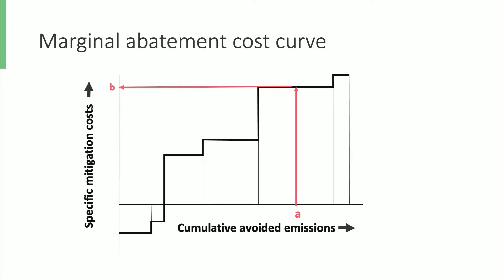Conversely, you can also determine how much emissions you avoid if you take all measures below a certain cost level. For example, in this case, if you take all the emission measures that are cheaper than C, you would avoid an amount D of emissions.